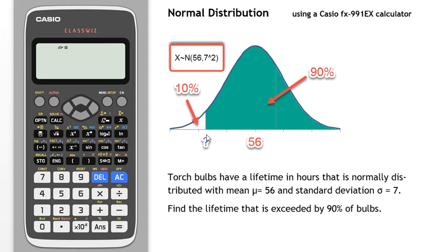So we try to find the data value such that 90% of bulbs will last longer than that and 10% of bulbs will last a shorter time than that.